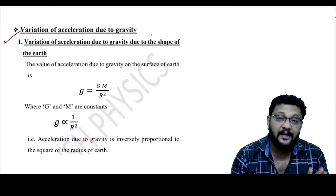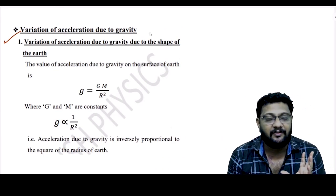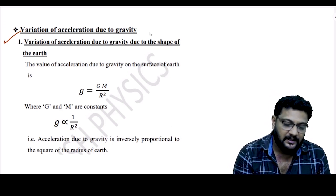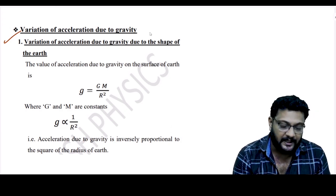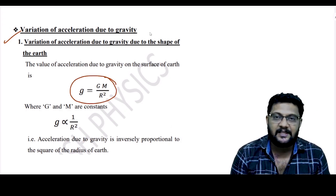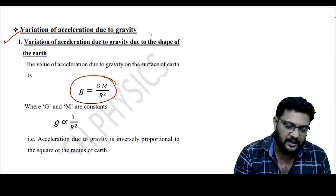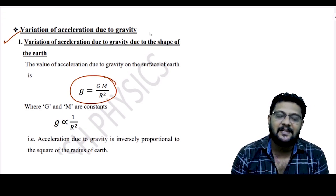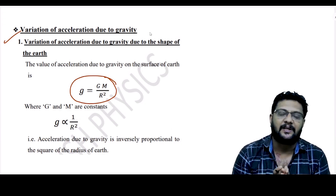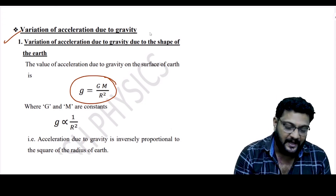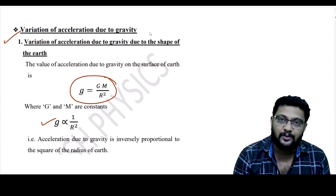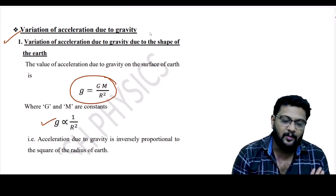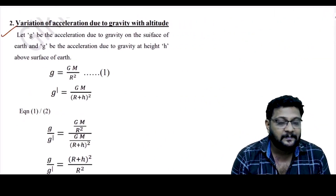Now we look at the variation of acceleration due to gravity. There are variations due to the shape of the Earth, altitude, and depth. From the main equation g = GM/R², since G and M are constant, g is proportional to 1/R². So acceleration due to gravity is inversely proportional to the square of the radius of the Earth.